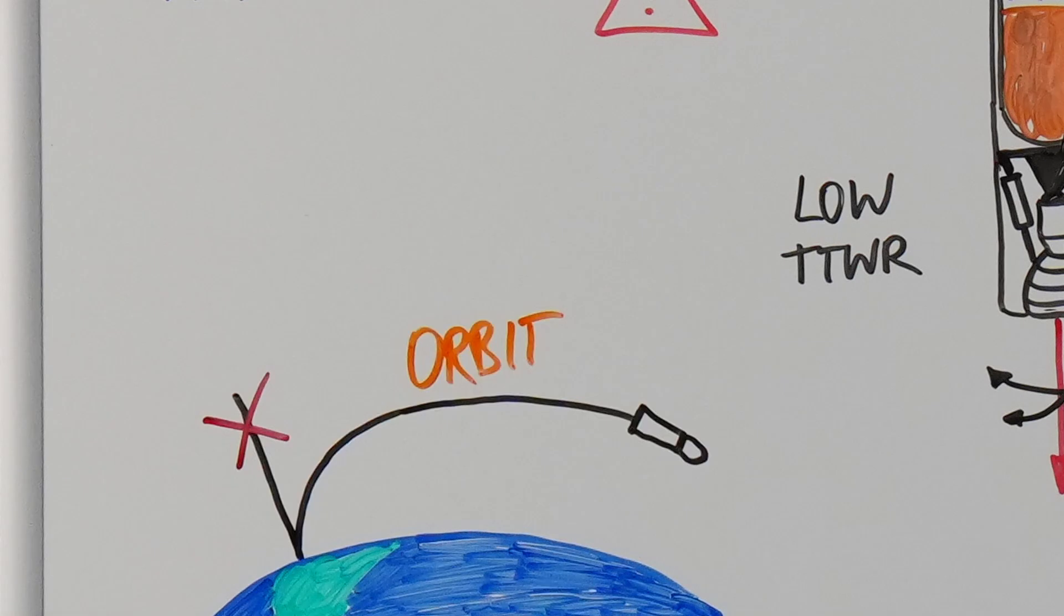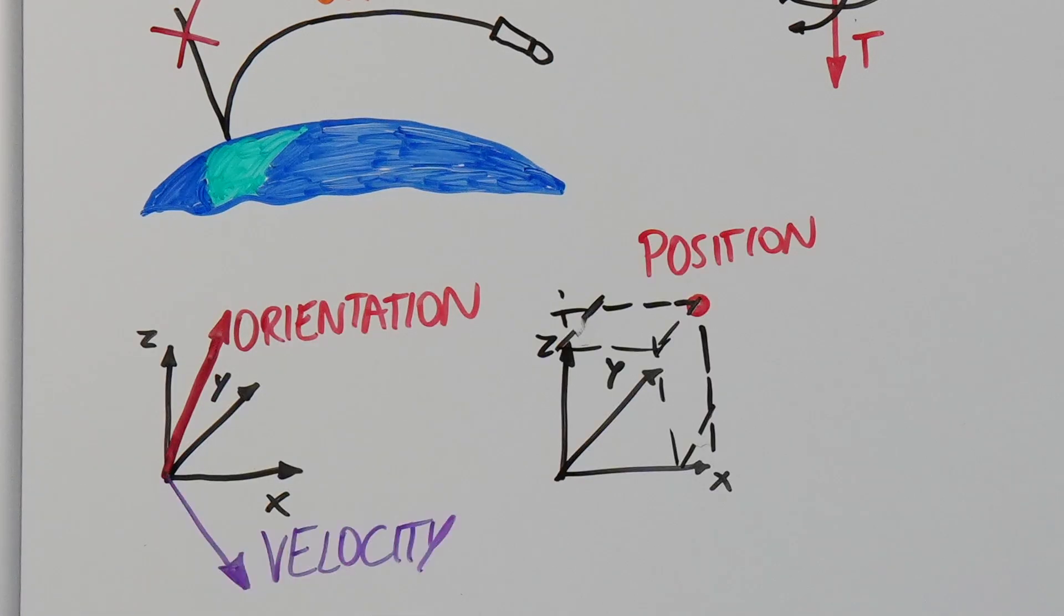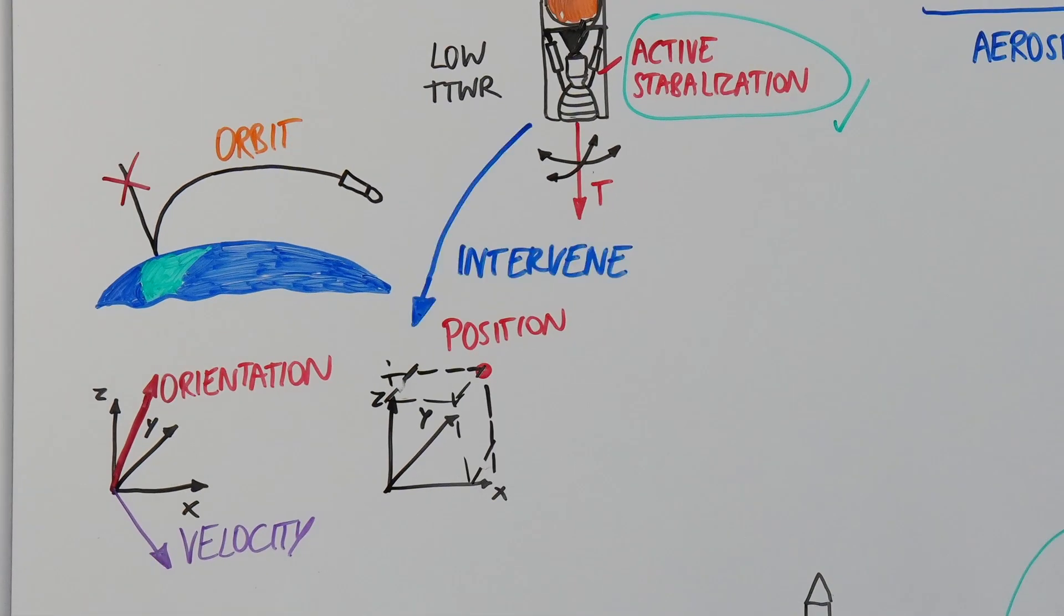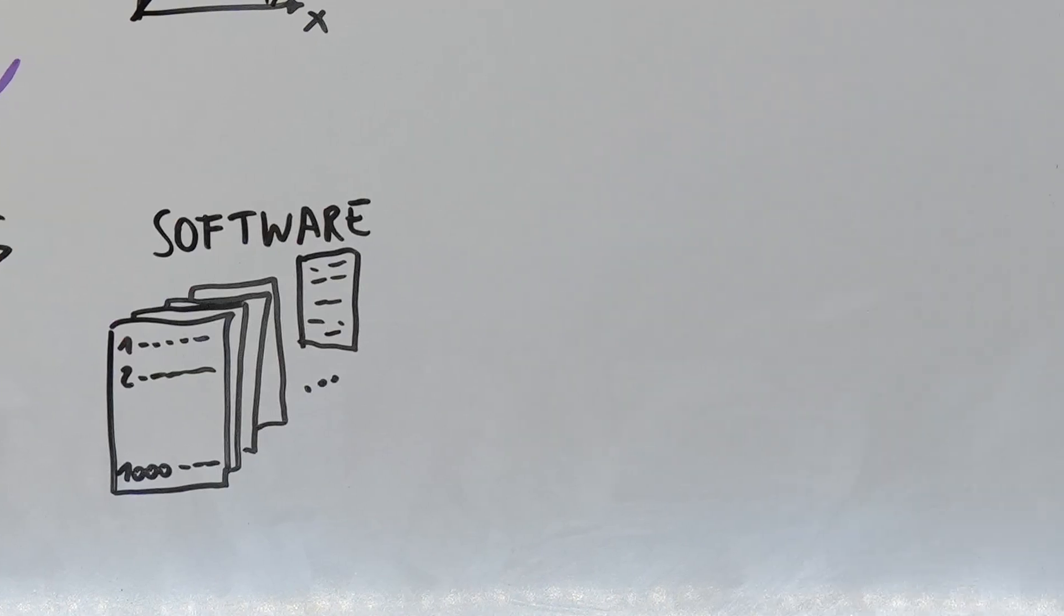Finally, for a rocket to escape Earth, it must achieve orbit. Orbit insertion requires precise knowledge of the vehicle's orientation, position, and velocity, and the rocket must be capable of actively controlling these parameters. To do so, electronic systems, advanced software, and complex physical systems are incorporated inside every launch vehicle.